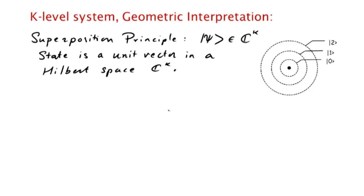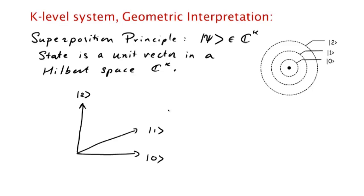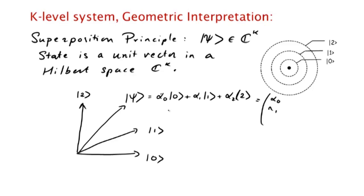We have a k-dimensional complex vector space with an orthonormal basis consisting of the states ket 0, ket 1, ket 2, through ket k minus 1, and the state psi is a unit vector. If we write psi as alpha 0 ket 0 plus alpha 1 ket 1 plus alpha 2 ket 2, we could also write it in standard vector notation as the column vector (alpha 0, alpha 1, alpha 2), where these are complex numbers — so psi belongs to a three-dimensional complex vector space.